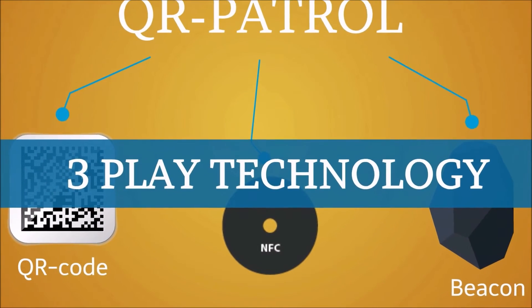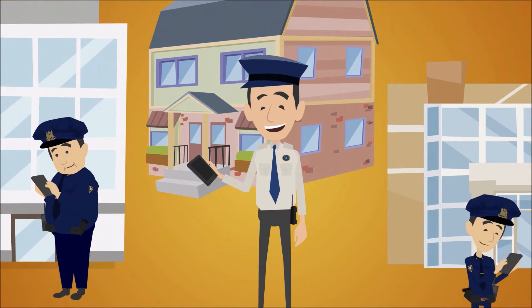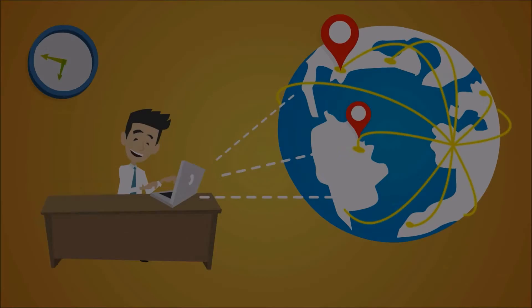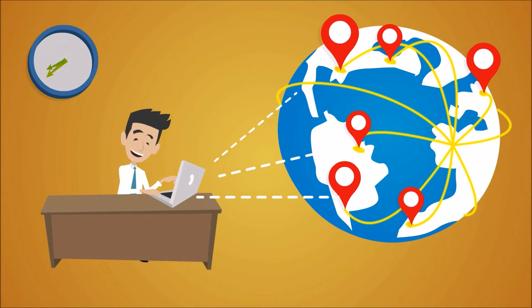Every time a guard takes action, John receives the incidents in real time. John can now monitor unlimited locations and assets all over the world thanks to QR Patrol cloud technology.